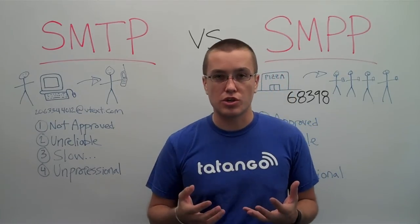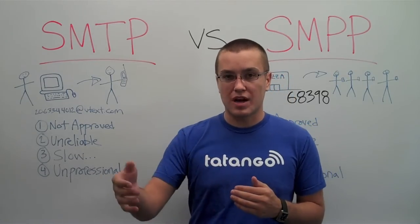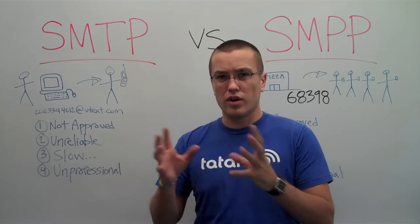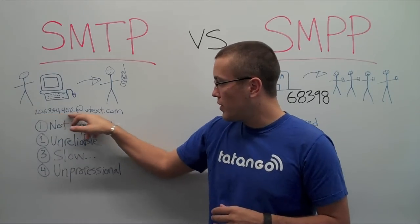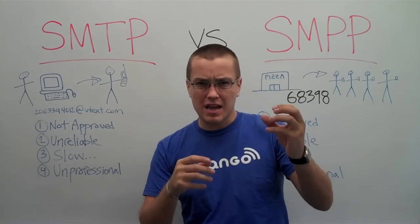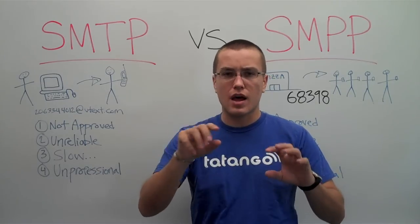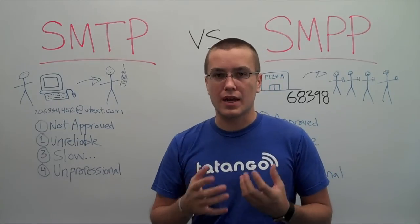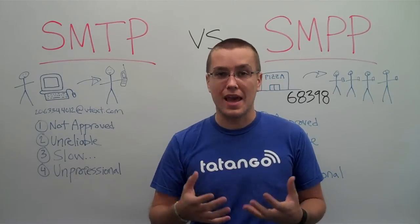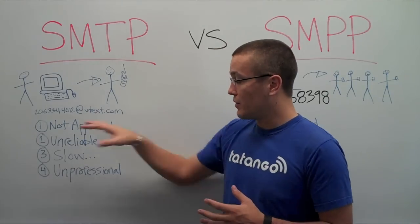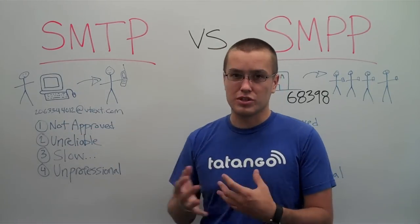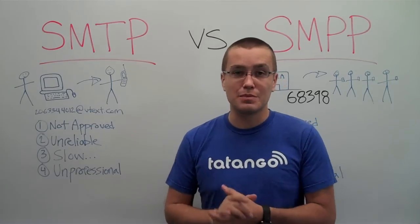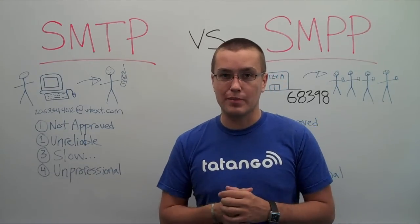Number four, it's unprofessional. When the message comes through to a mobile phone, it looks very garbled. It comes from a phone number, has a subject with dash lines in it, and then the message. It doesn't look like a professional SMS campaign. In addition to not being approved by cell phone carriers, you should not be using SMTP for your SMS marketing campaign.